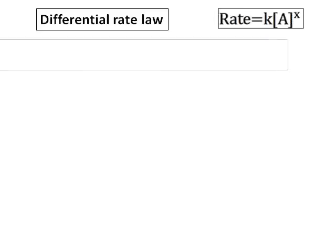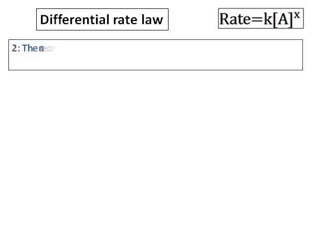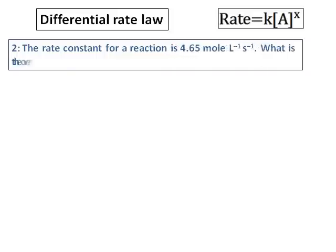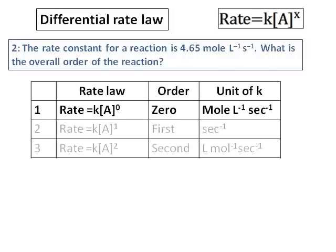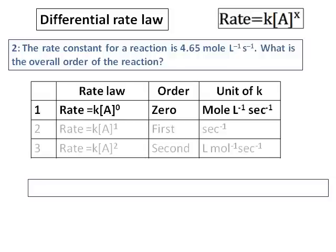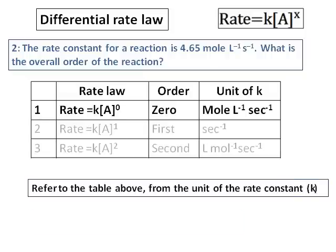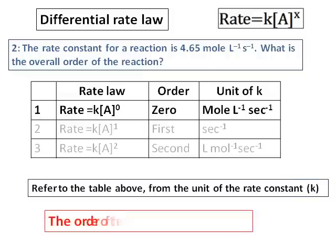Let's do another question on differential rate law. The rate constant for a reaction is 4.65 mol·L⁻¹·s⁻¹. What is the overall order of the reaction? This is a simple question. The unit of the rate constant is given, and the rate constant's unit is related to the order of the reaction. Referring to the table, the unit mol·L⁻¹·s⁻¹ belongs to a zero-order reaction. Hence, the order of the reaction is 0.